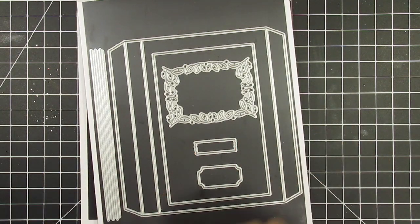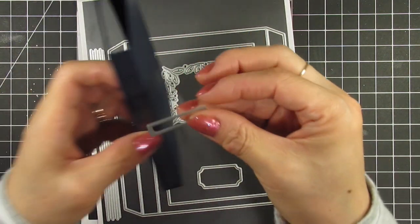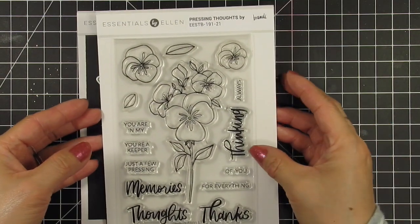The little sticker label is also shaped like a piece of tape or washi tape which you can use to decorate the spine of the book. The second new release product is the pressing thought stamp set which is also designed by Brandy Kincaid.